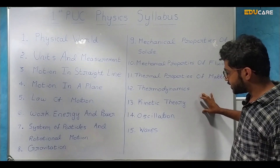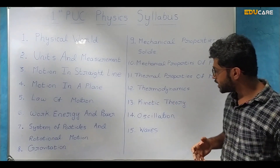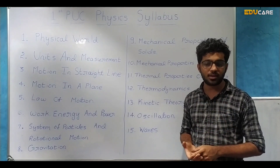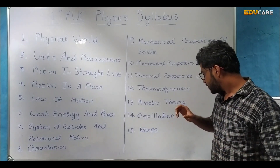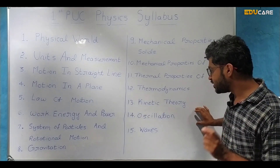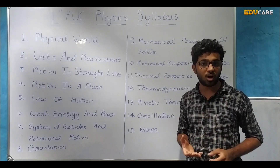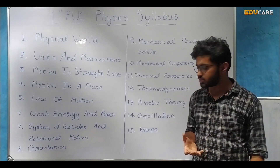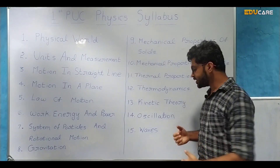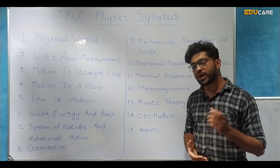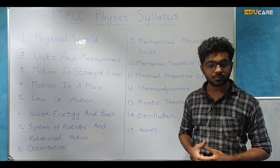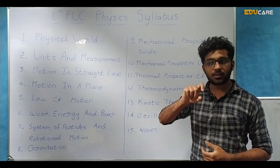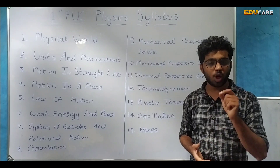The next chapter is Oscillations. In that chapter we are going to study what is periodic motion, what is the meaning of oscillation, and the main subject of this chapter is Simple Harmonic Motion — what it means and where we can observe it. The last chapter is Waves. In this chapter we study the meaning of waves, different types of waves, modes of propagation of waves, properties of waves, and the important concept of the Doppler Effect.